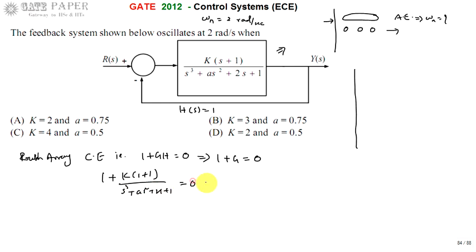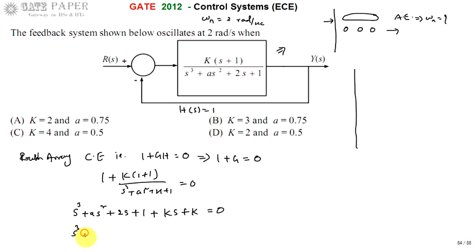Substituting G, we get 1 + k(s + 1) / (s³ + as² + 2s + 1) = 0. After simplifying, the characteristic equation becomes: s³ + as² + 2s + 1 + ks + k = 0. Collecting similar coefficient terms gives s³ + as² + (k + 2)s + (k + 1) = 0. This is the characteristic equation for the given unity feedback system.